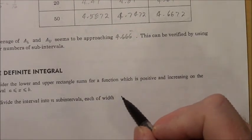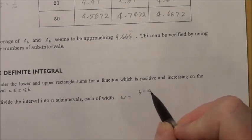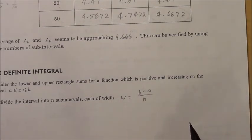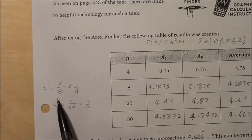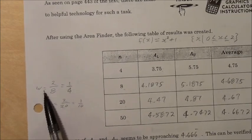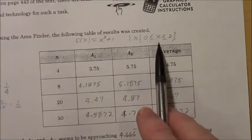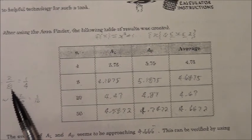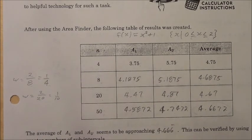So the width is going to be b minus a divided by n. This is basically what we did before — the 2-unit width from the domain divided by the number of rectangular strips, which gives us a width of 1 over 4.